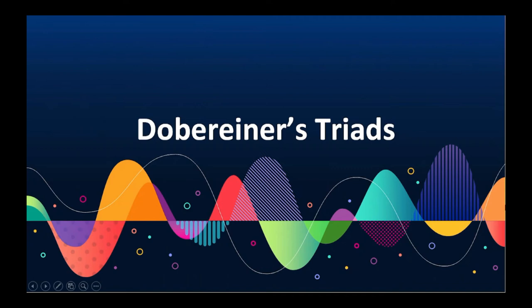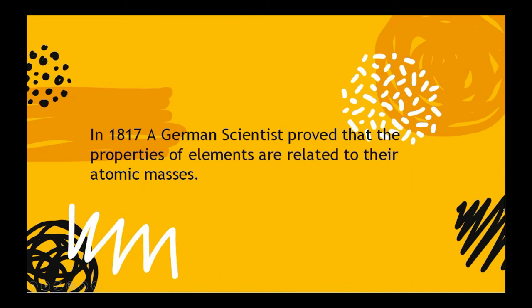Welcome to Captured! Hello learners, in this video we are going to learn about Dobereiner's triads, which is in the periodic elements chapter. So let's jump into it. In 1817, a German scientist proved that the properties of elements are related to their atomic masses.